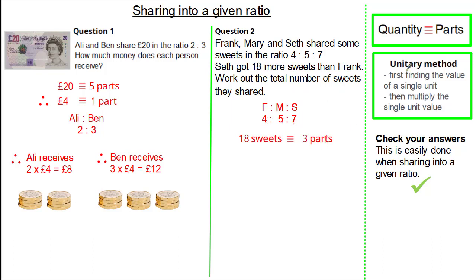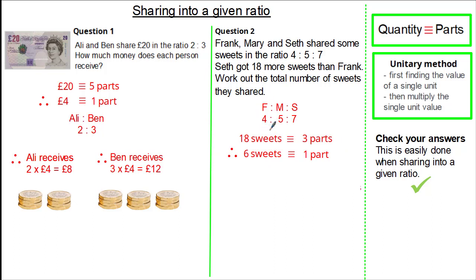Because Seth gets 18 more sweets than Frank, and Seth gets 3 more parts than Frank, we've written our quantity equivalent to parts. Using the unitary method, we divide by 3 to identify 1 part. So 1 part is equivalent to 6 sweets. Frank receives 4 parts, so it's 4 multiplied by 6, giving 24 sweets for Frank.